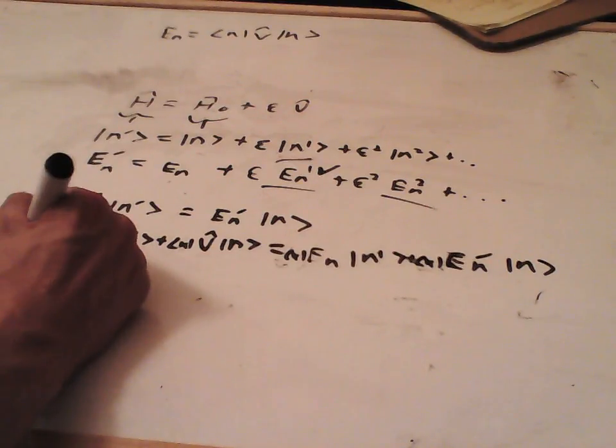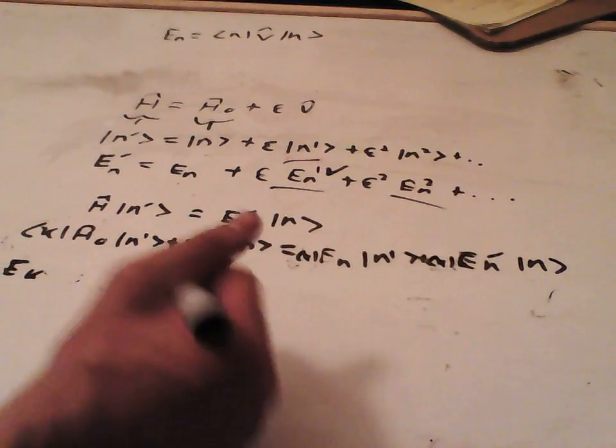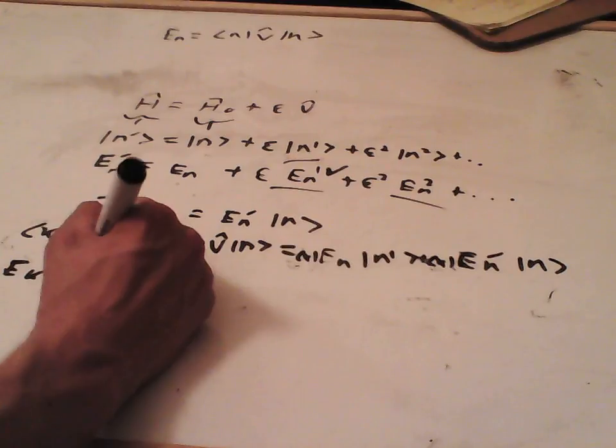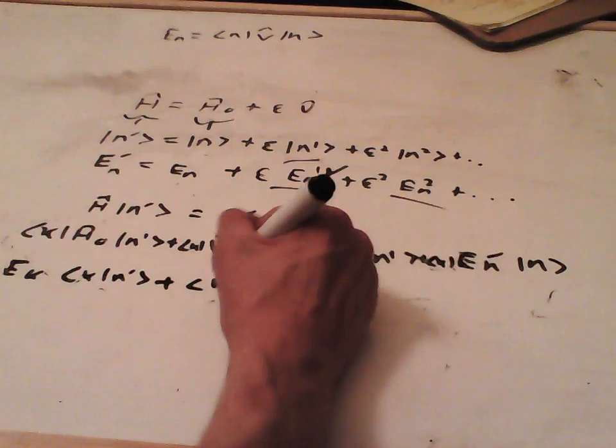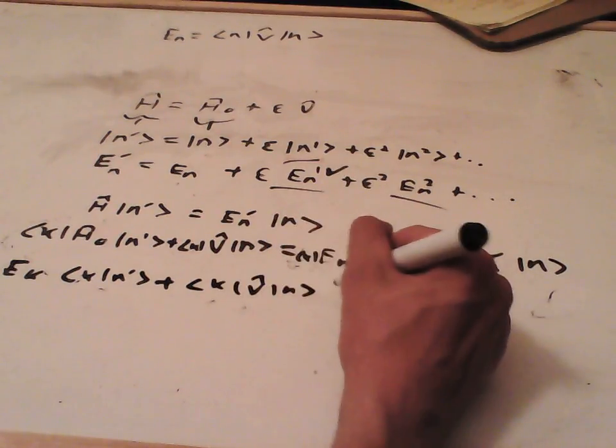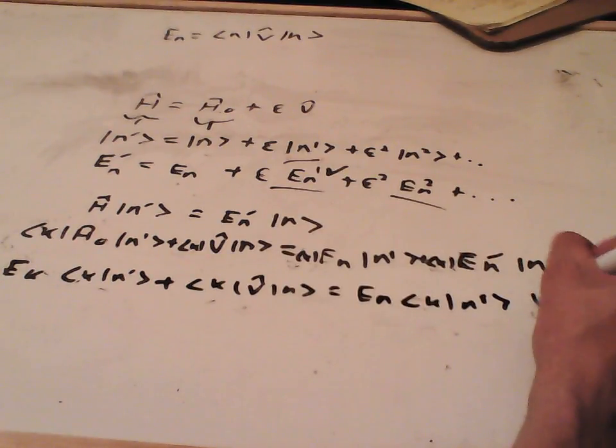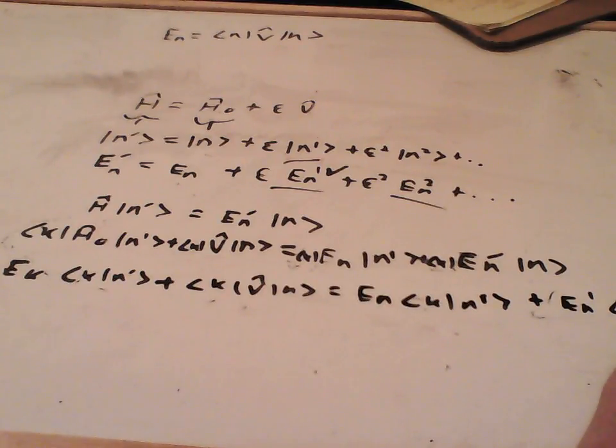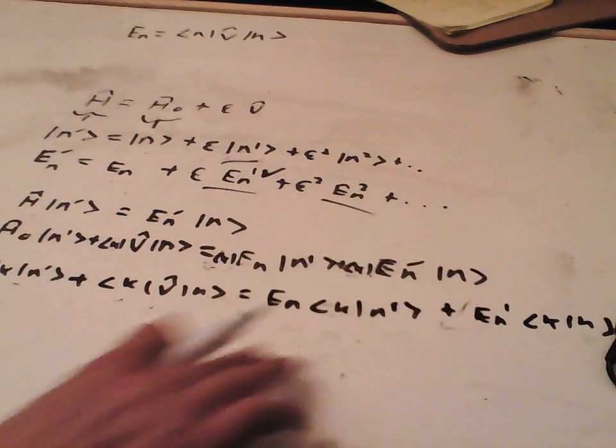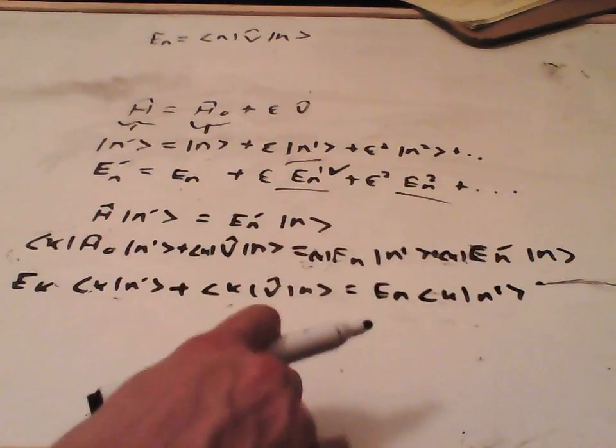So we are going to now do this. So this becomes Ek, because remember this Hamiltonian is Hermitian. So we can act it either this way or we can act it this way. So we can act it this way to give Ek. And that's going to give us k n1. Plus this remains as it is, we can't do anything with this. And this becomes En1 k n, which happens to be zero.